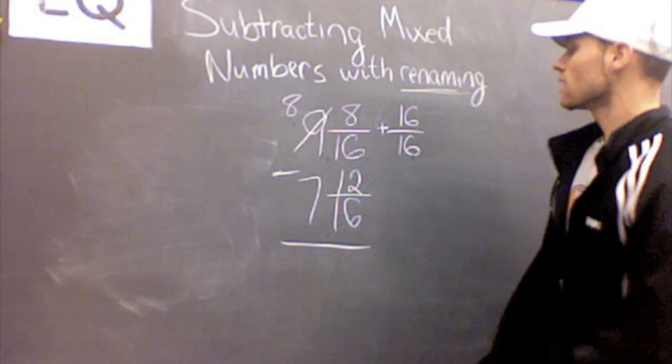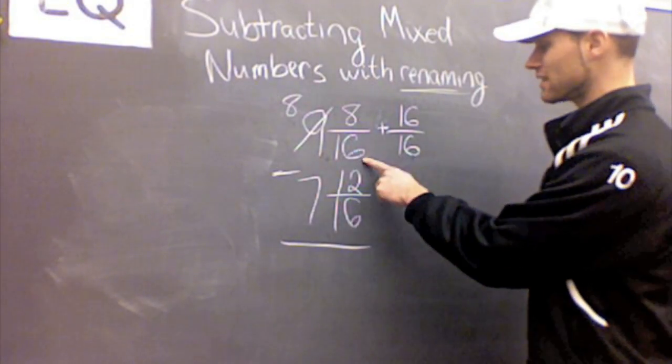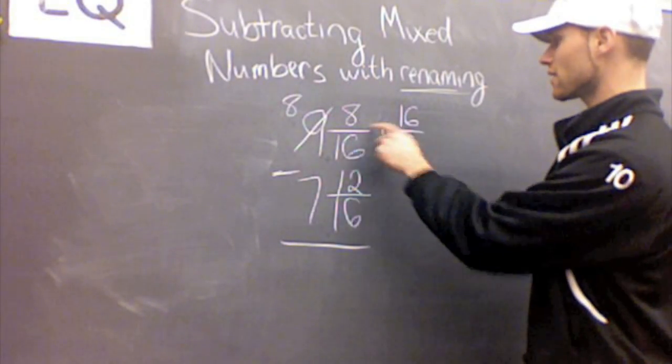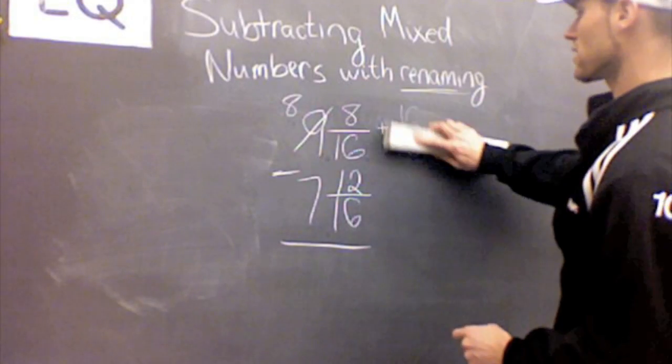Really all I'm doing is I'm adding my denominator to my numerator. That's really what I'm doing. And I'm going to get 24 as my numerator.